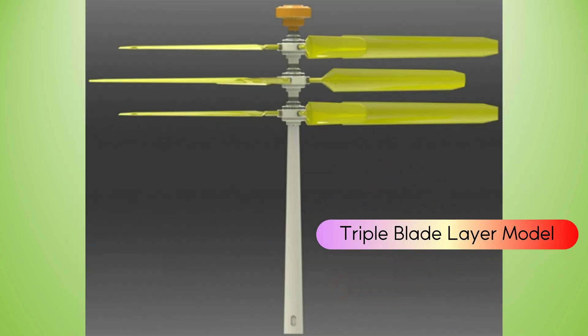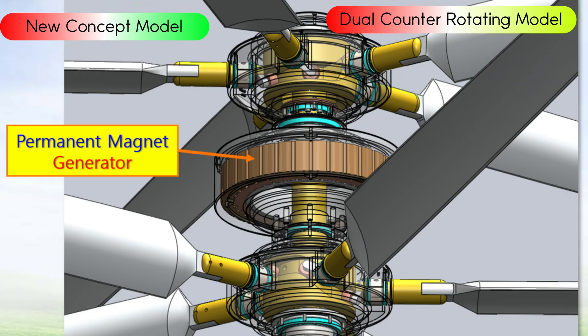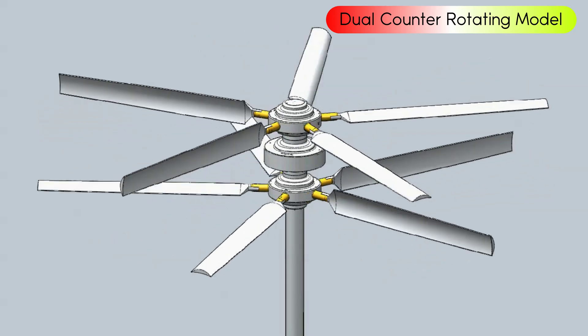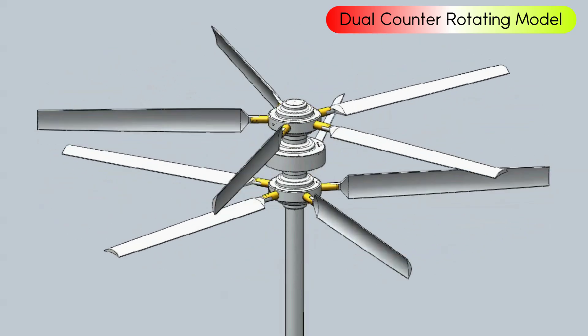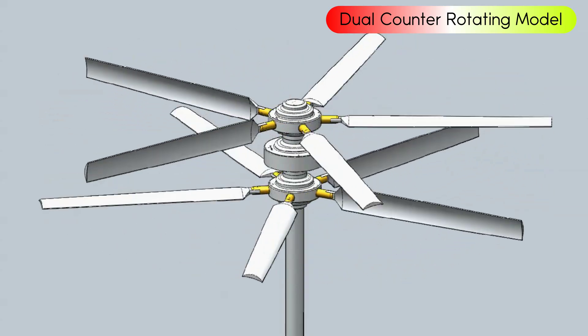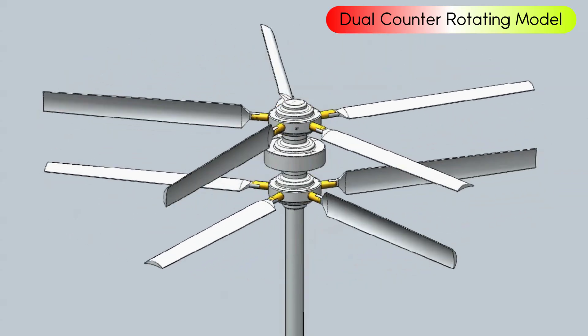This is a triple blade installed model. Installing more blades is not recommended because the left and right balance is out of place. This is an improved model that allows each blade to rotate in reverse with each other to increase the stability of the system. In addition, the permanent magnet generator was placed in the middle to increase functionality and facilitate airflow.